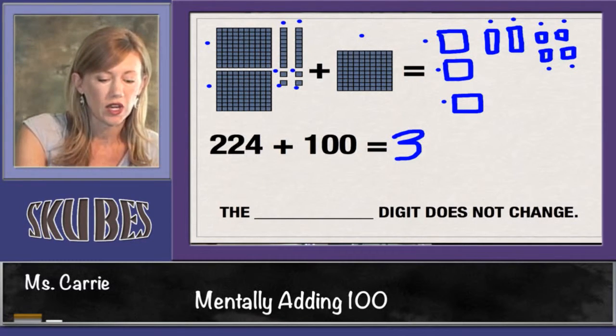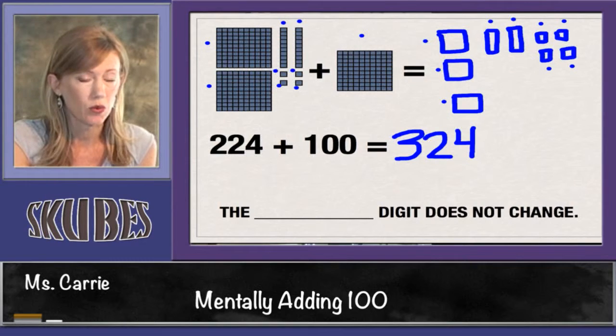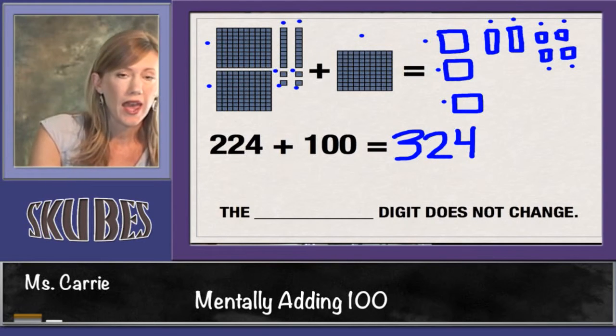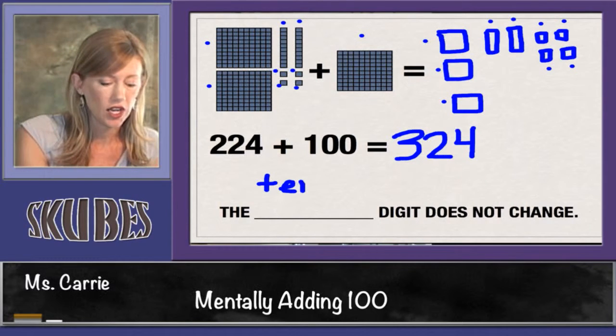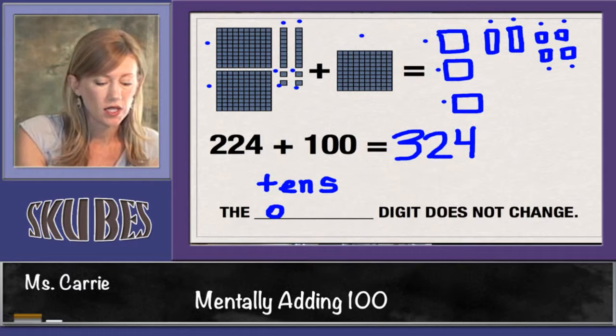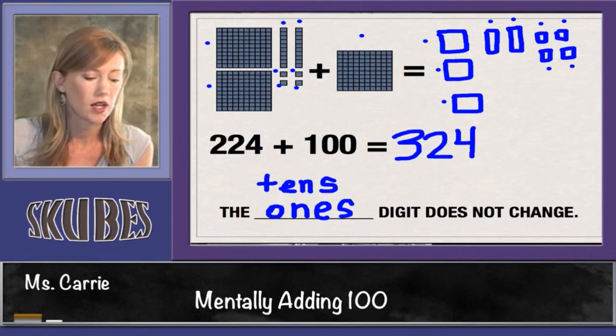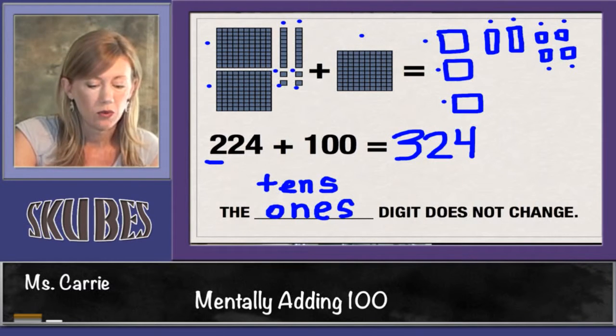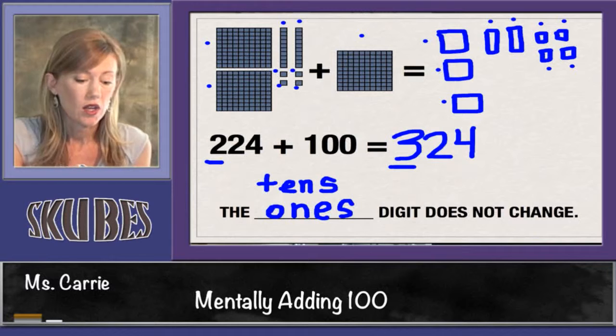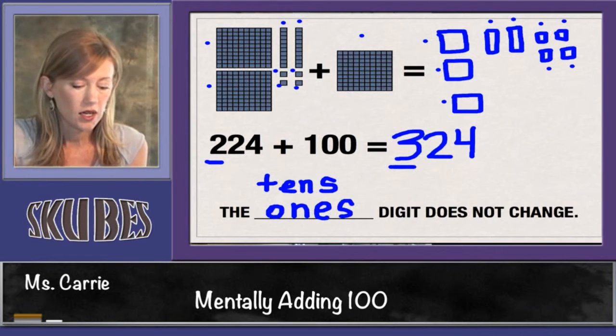Our answer is 324. If you notice from our picture, the hundreds changed. We added 100, but the tens stayed the same and the ones stayed the same. So when we add 100 to a number, the tens digit does not change and the ones digit does not change. Only the hundreds digit changes and it goes up one. And you can see that in our number here. We started with 224 and when we added 100, we got 324. The hundreds digit went up one, but the tens digit stayed the same and the ones digit stayed the same. Let's look at another one.